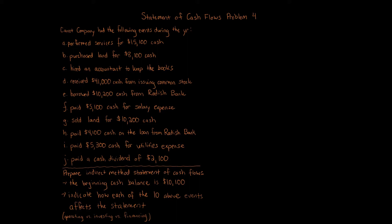Since we have to prepare the entire indirect method statement of cash flows, first we're going to go through all these transactions and classify whether each is in operating, investing, or financing activities, or if it might not go on any portion. Starting with A — perform services for $15,100 cash — that's going to go towards operating activities in terms of determining our net income.